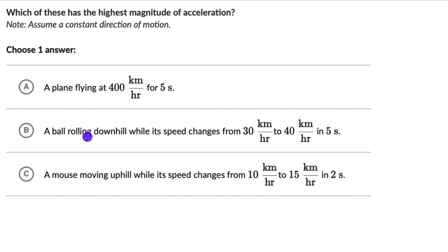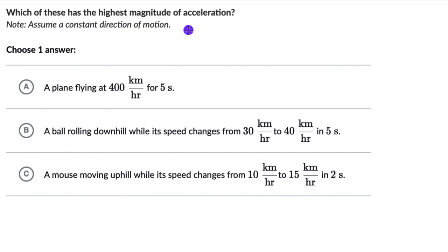Let's solve a couple of questions on effects of acceleration. The first one asks: which of these has the highest magnitude of acceleration? There is a note which says assume a constant direction of motion. So the direction is not changing — we can say the object is moving in the same direction. We have to choose one answer out of three options.